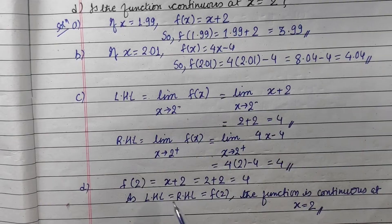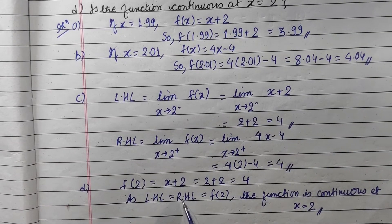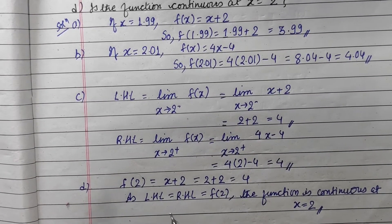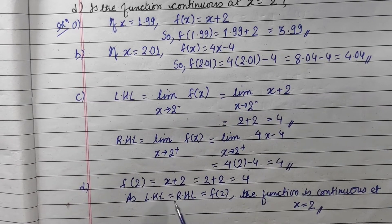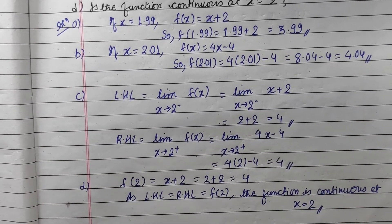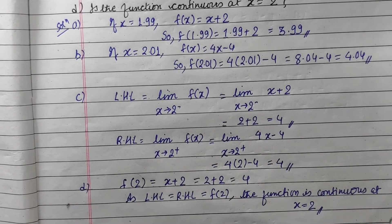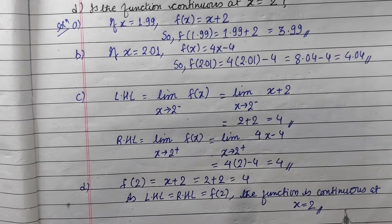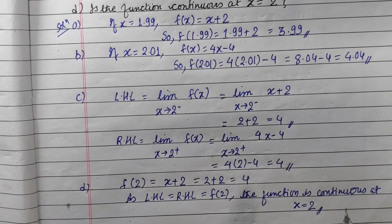In summary, if the left-hand limit equals the right-hand limit equals the function value, then the function is continuous. If any of these are unequal, then the function is discontinuous. This is a very important question in this chapter. Thank you.